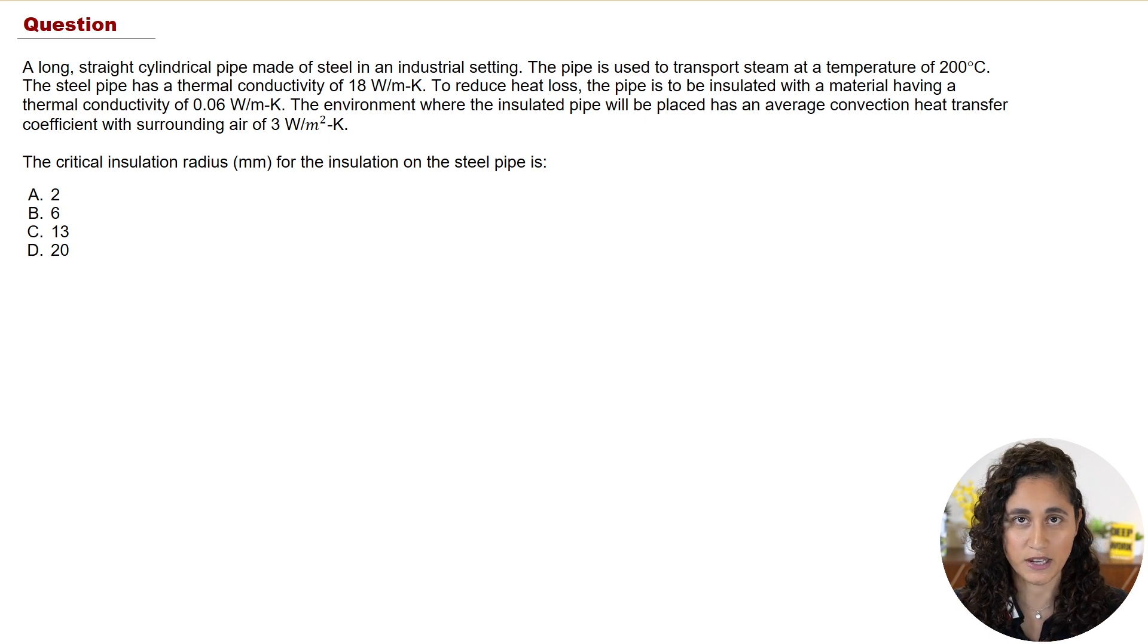Now before we start solving this problem, let's go over critical insulation radius. So when we want to reduce heat loss, we usually add insulation to the pipe or an object. But here's the problem: if we add too much insulation, then the heat loss actually increases, which is the opposite of what we want. And the reason why it increases is because now we are increasing the surface area of the pipe, and that will actually increase the heat flow.